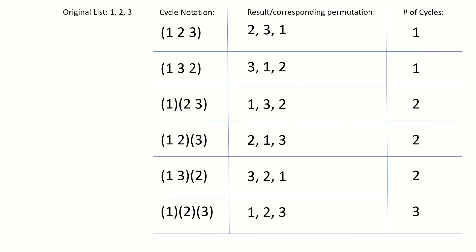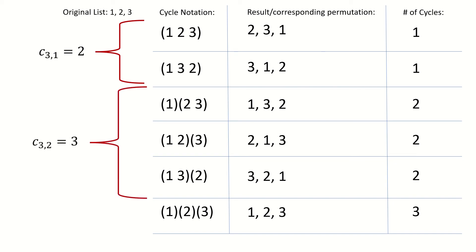Here are all the permutations of a list of three elements, along with their cycle notations and number of cycles. Unsigned Stirling number c sub 3 1 equals 2 because there are two distinct permutations of three elements with one cycle. c sub 3 2 equals 3 because there are three distinct permutations with two cycles, and c sub 3 3 equals 1 because there is one distinct permutation with three cycles.